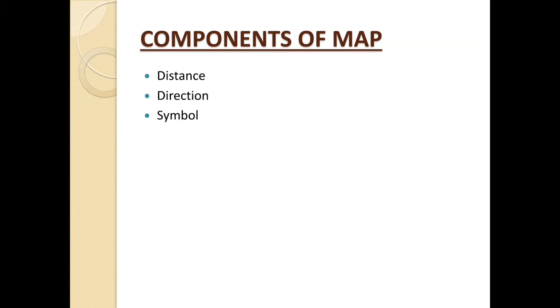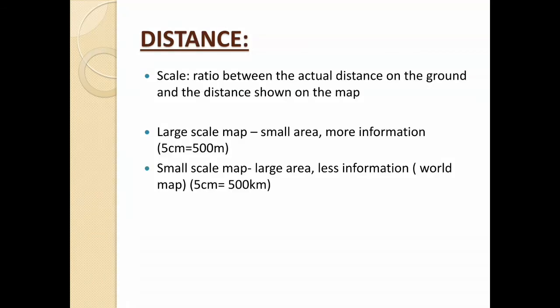There are three different components of a map: distance, direction, and symbol. The first component is distance. Scale is the ratio between the actual distance on the ground and the distance shown on the map. On the basis of scale, there are two types of maps: large scale map and small scale map.